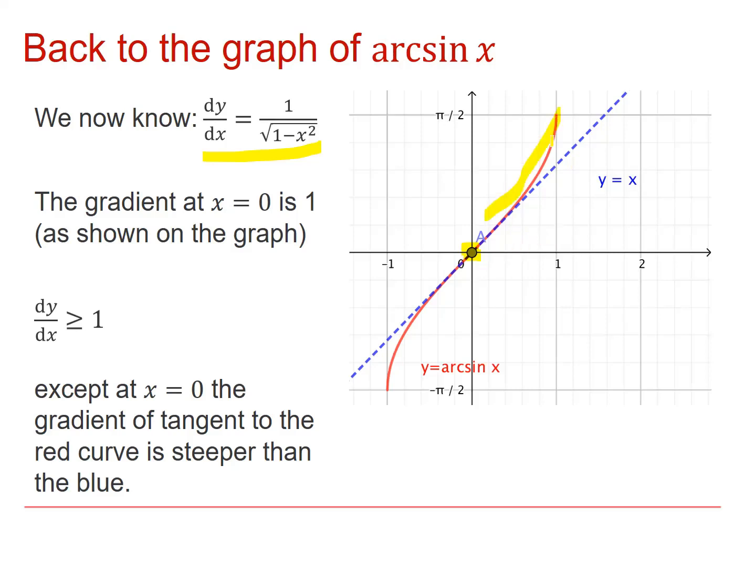Above zero and below zero, the curve moves away from the blue line and gets steeper in both cases. So in fact, the gradient of arcsin x is always greater than or equal to one. So not only is it always positive, but actually it's always greater than or equal to one.